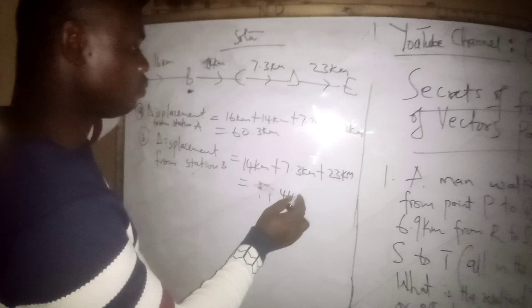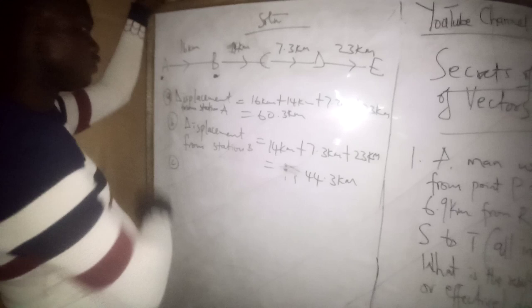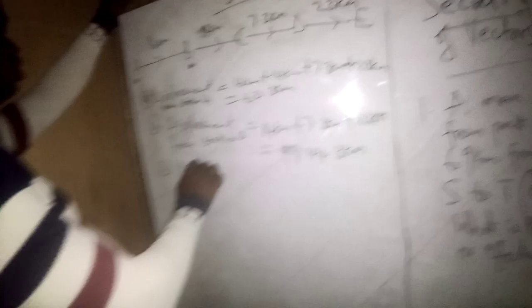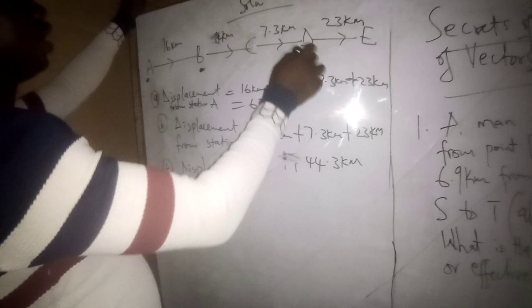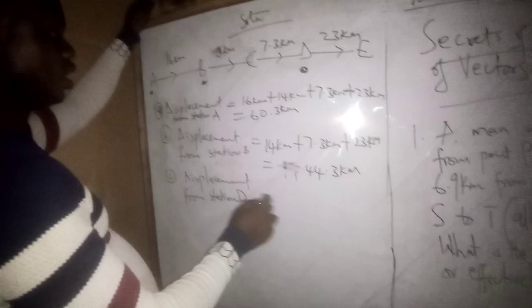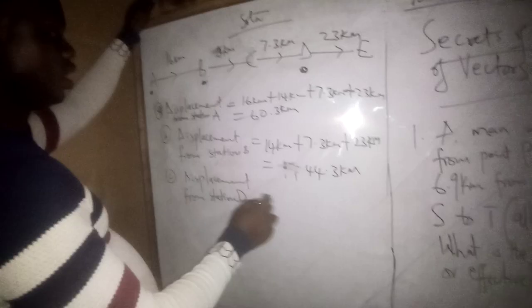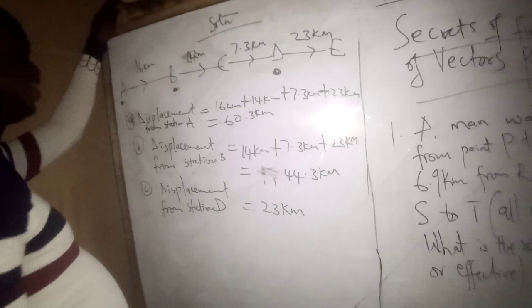If the question asks from Station D, you only add from D, which gives 23 kilometers. If it says from Station E, the displacement is 0 — we call that the ending point.